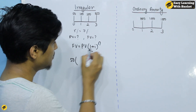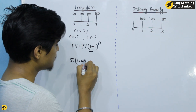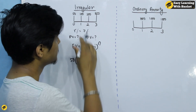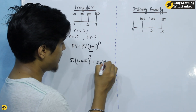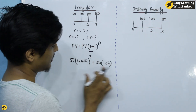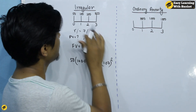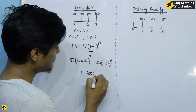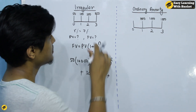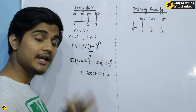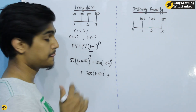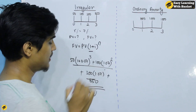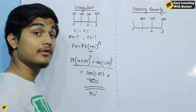Present value: 50 divided by (1 plus 0.07) to the power 3, plus 100 divided by 1.07, plus 300 divided by (1 plus 0.07) to the power 1, plus 850 discounted accordingly. This gives you the present value of the irregular cash flows.